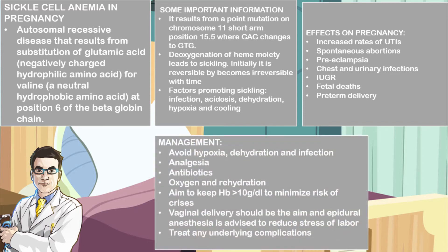In the management of the condition, you want to avoid hypoxia, dehydration, and infections. You want to provide adequate analgesia, cover them on antibiotics, give oxygen and rehydration, and aim to keep the hemoglobin above 10 grams per deciliter to minimize any risks of crisis. Aim for vaginal delivery if there are no contraindications, and provide epidural anesthesia to avoid the stress of labor.